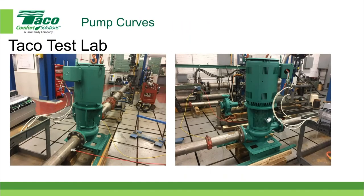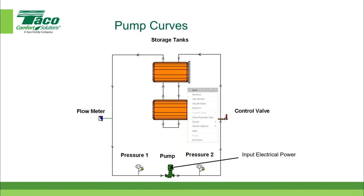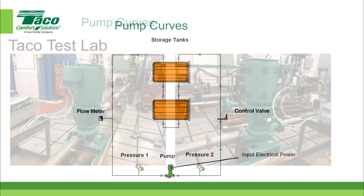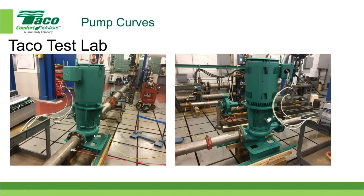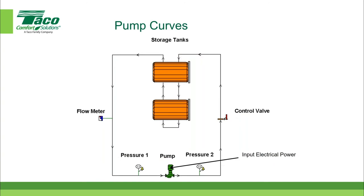Here you can better see the connections for the pressure taps. This is a vertical inline pump being set up for testing. There's a yellow tube connected to the suction side of the pump that measures the suction pressure, and a red tube connected to the discharge side to measure the discharge pressure. Way in the back there's a blue device that measures the flow in gallons per minute. We need four pieces of data: flow in GPM, suction pressure, discharge pressure, and the power consumed by the pump.